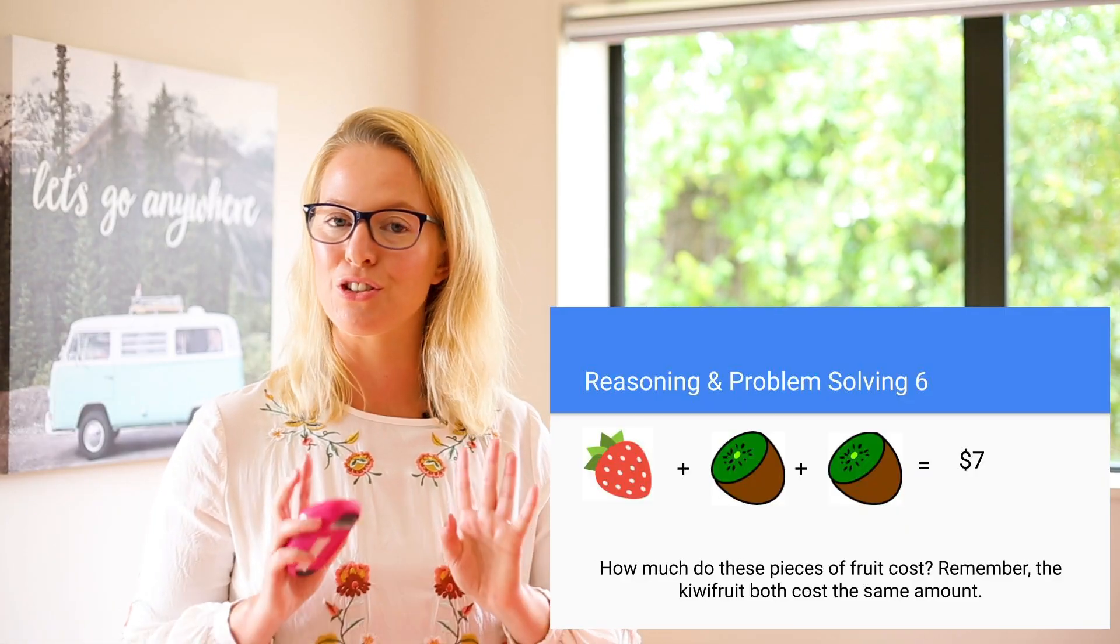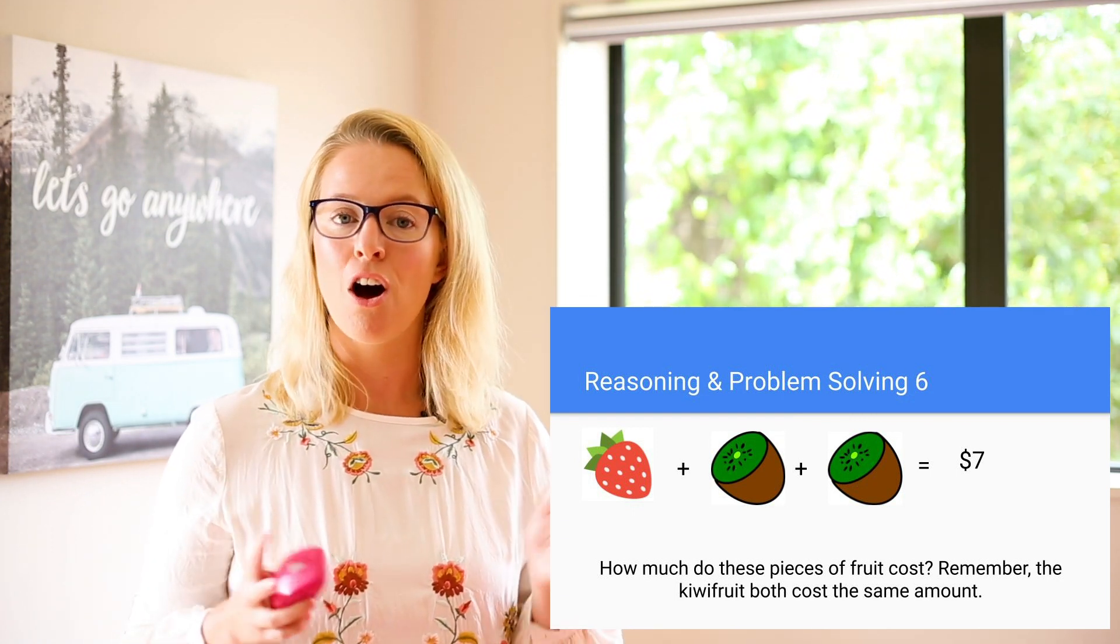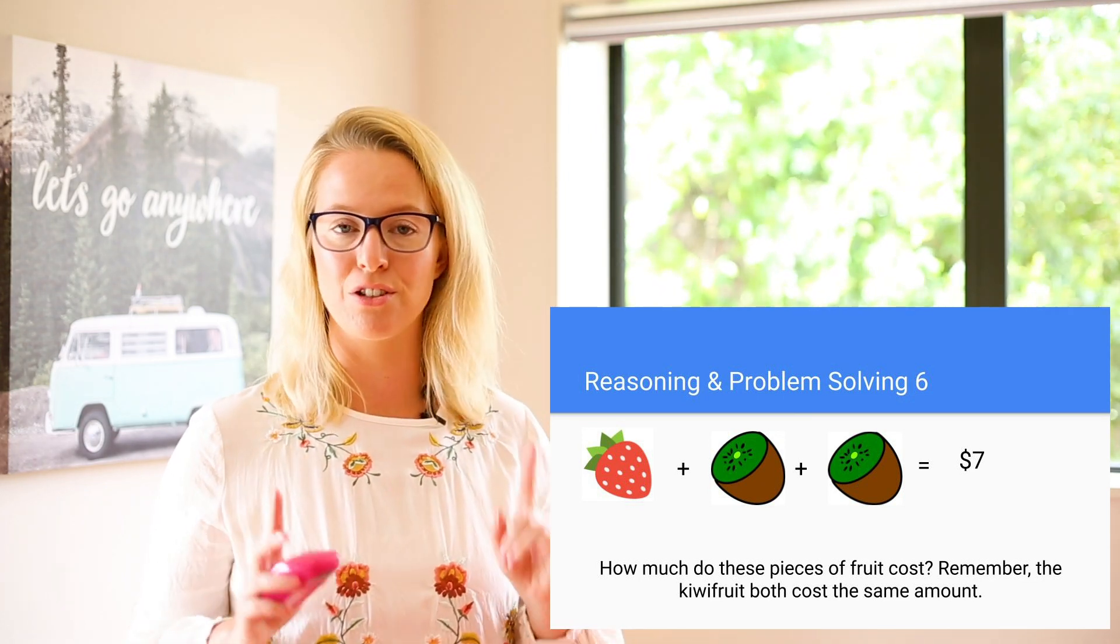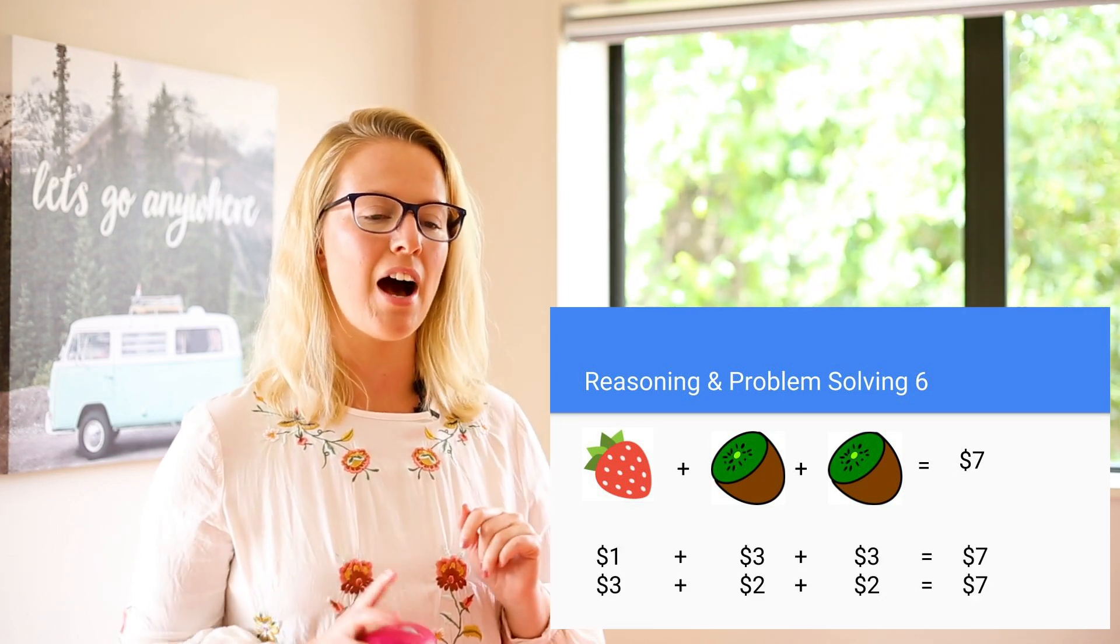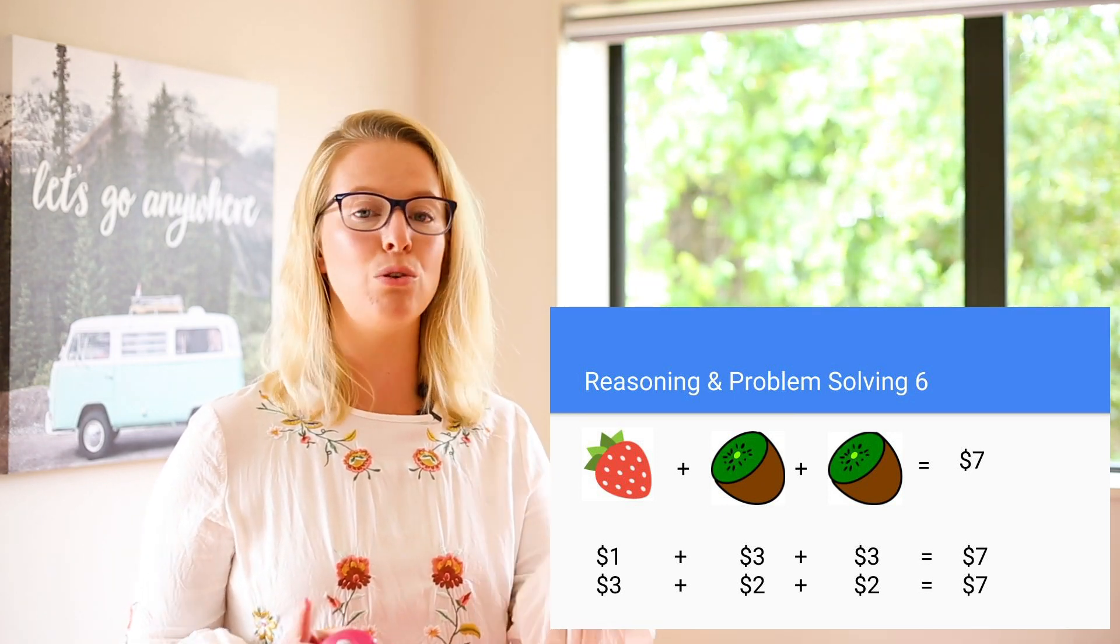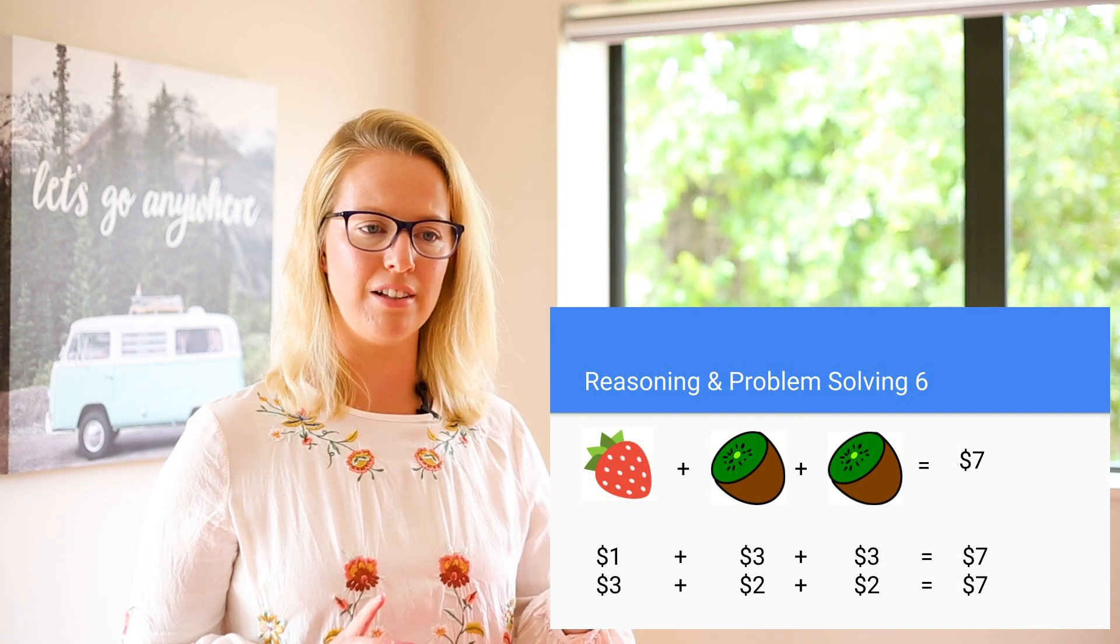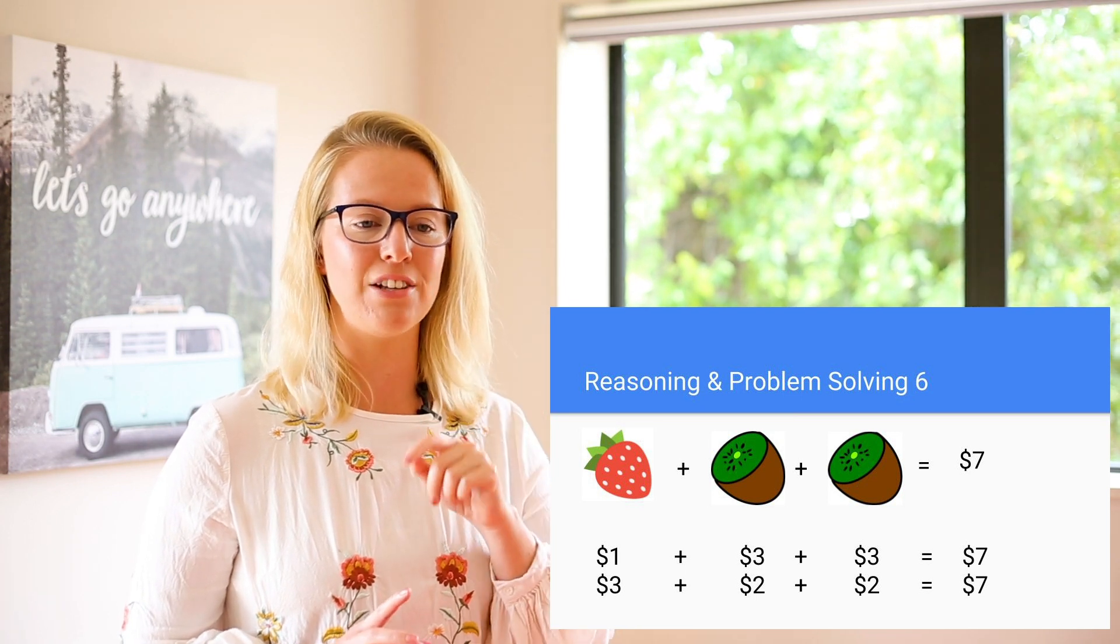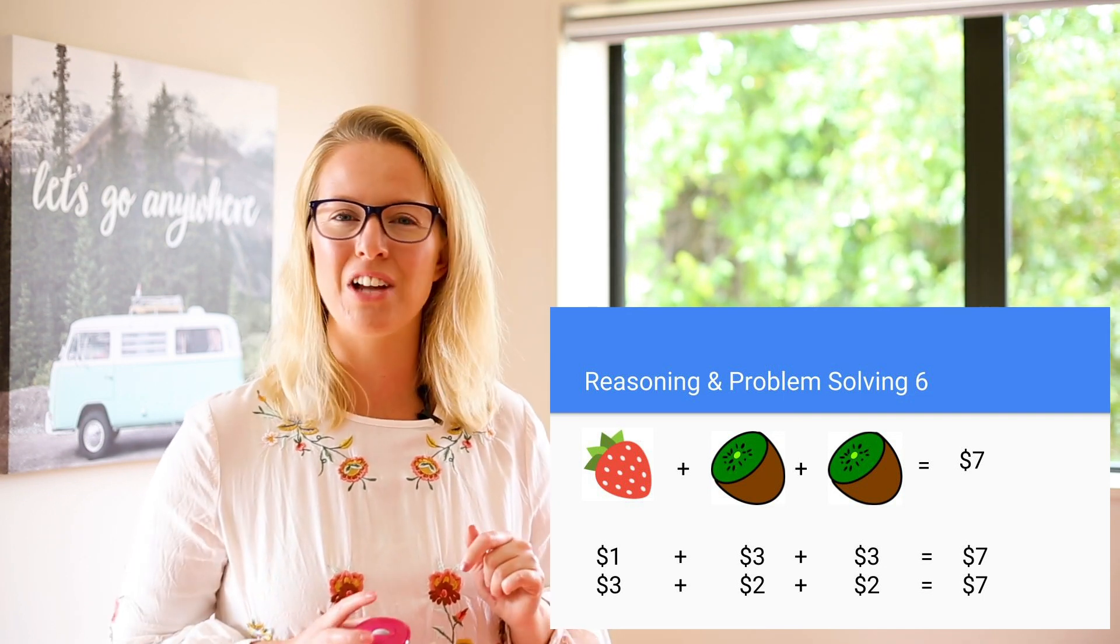Okay, I wonder what answers you got. I'm going to put up on the screen two different equations that I got for these pieces of fruit. Of course, these are not the only equations. You might have other ones that also equals seven dollars, but remember your kiwifruits have to cost the same amount. So I've got one that the strawberry costs one dollar and both the kiwifruits cost three dollars, which all together equals seven. And then I also tried the strawberry costs three dollars. That's a very expensive strawberry. And the two pieces of kiwifruit cost two dollars each and all together that equals seven dollars. So you might have had different equations. I wish I could see them.